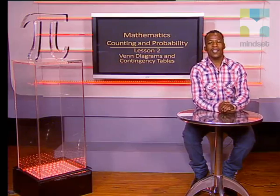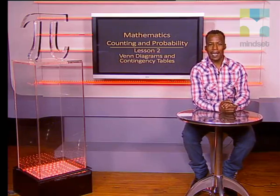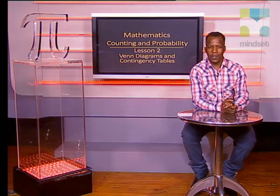Hello Grade 12s. Today we'll be going through a few problems on Venn diagrams and contingency tables. Let's look at a Venn diagram first. We'll do this by examining the data collected from 62 students about the types of fruit they liked.